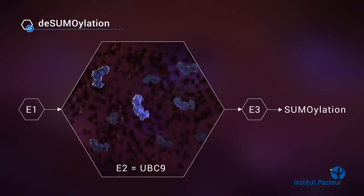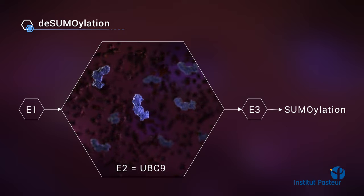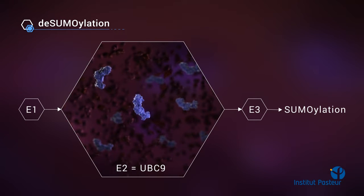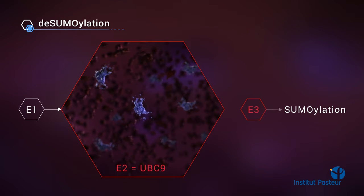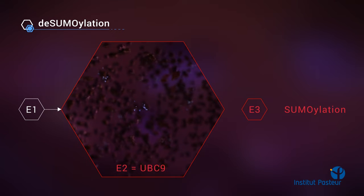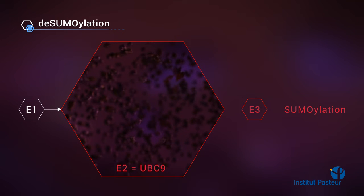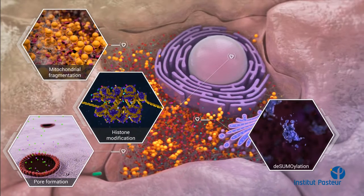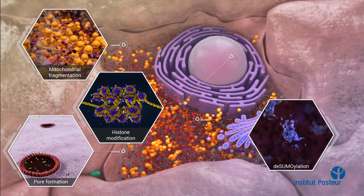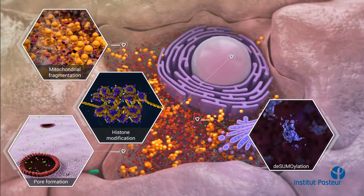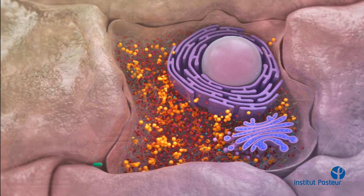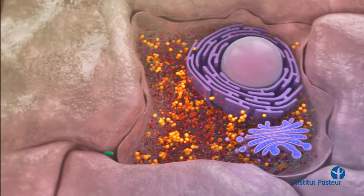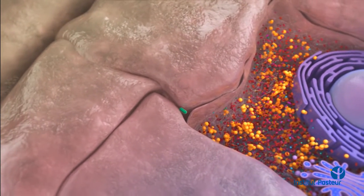UBC9, a critical enzyme of this pathway, is degraded in response to LLO, leading to an impairment of host sumoylation and an alteration of several host protein activities, including transcription factors. By all these processes, the bacterium can modulate host cell functions before its entry.